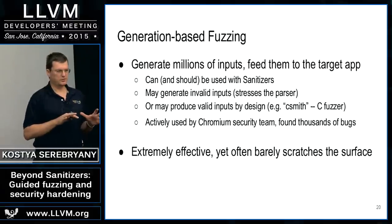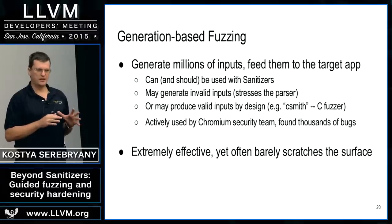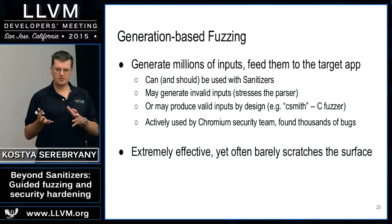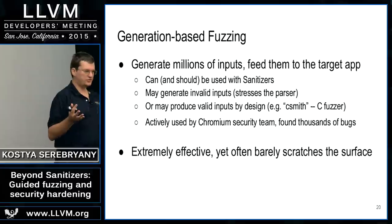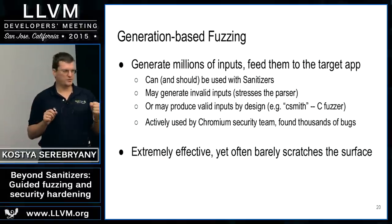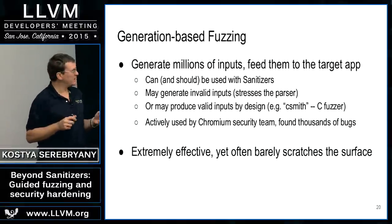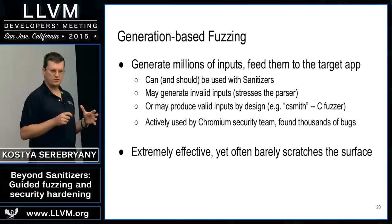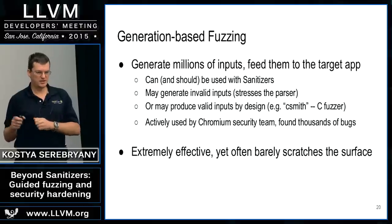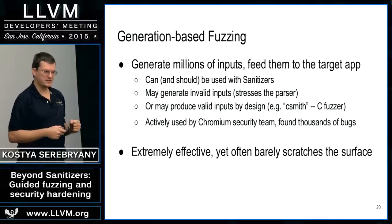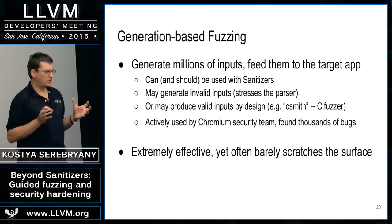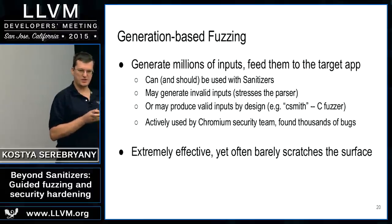One popular way to fuzz applications is generation-based fuzzing, where you generate inputs according to some grammar, rule, or randomly. This is extremely efficient in many cases. One of my favorite fuzzers of this kind is CSmith. We and many others have used CSmith to fuzz Clang itself — CSmith generates valid C programs that you can feed into any C compiler. However, this approach is not always as efficient as we would like; sometimes it just barely scratches the surface.